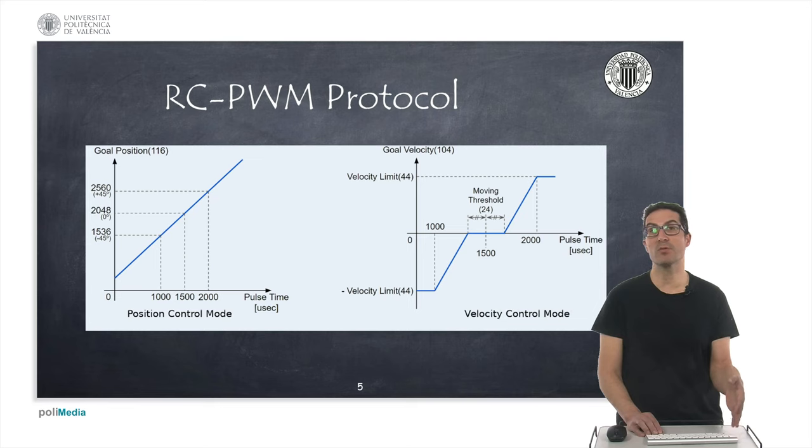If it's configured in position mode then the servo will move between a value between minus 45 degrees to 45 degrees, while if it's configured in speed mode then it will move between the configured speed limits.